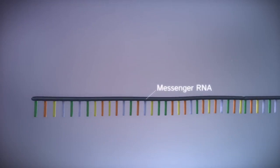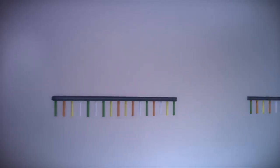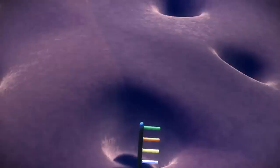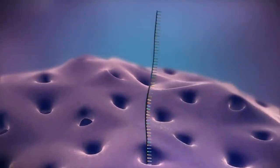Before the messenger RNA can be used as a template for the production of proteins, it needs to be processed. This involves removing and adding sections of RNA. The messenger RNA then moves out of the nucleus into the cytoplasm.